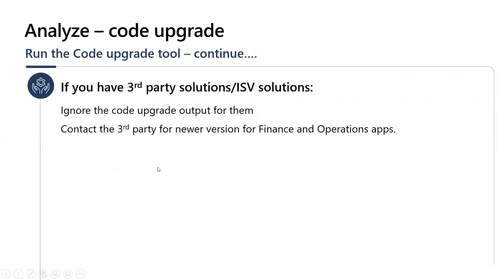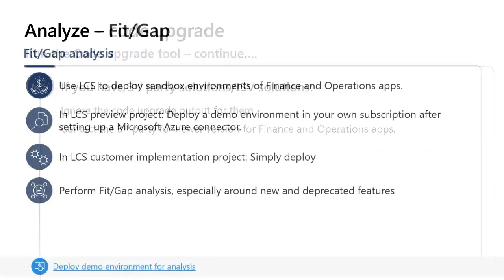During estimation, if you have any third-party or ISV solutions, make sure to ignore the output from the reporting for those. ISVs should not be manually upgraded — you need to contact the third parties for newer versions of those components.